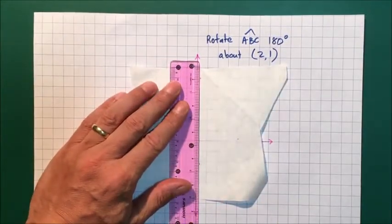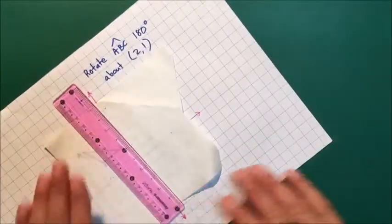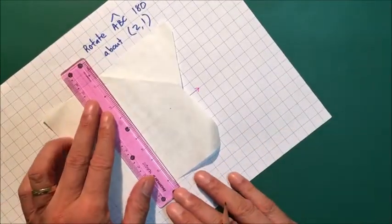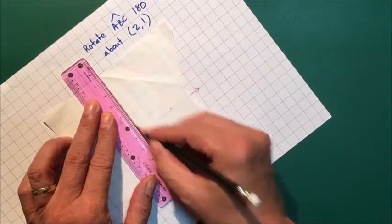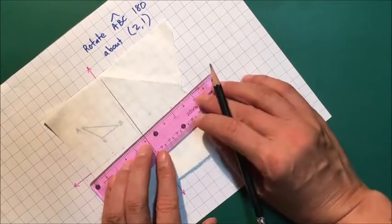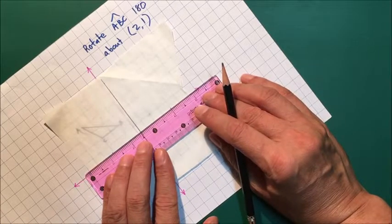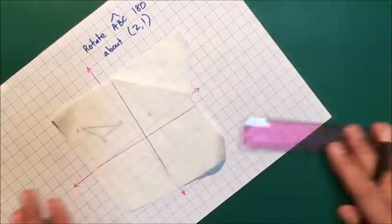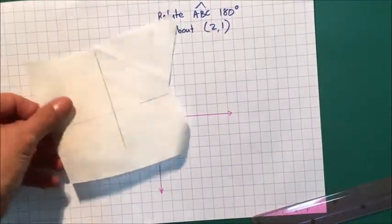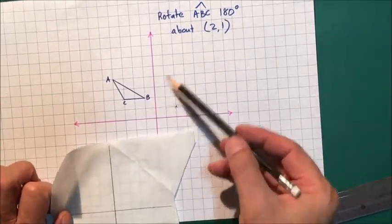Then I can go to the business of drawing the axes. I take my time just to make sure that is accurate. The more accurate I create these axes, the more accurate my rotation will be. So I've got my axes now, my set of axes.